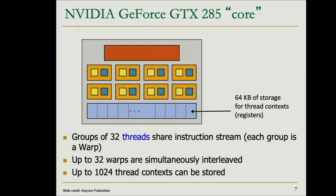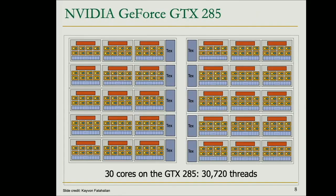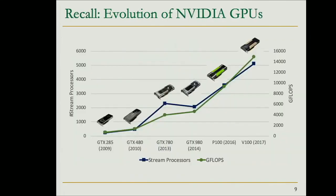On each GPU core, what we execute are thread blocks. Thread blocks are decomposed into warps, and each warp is a set of 32 threads that run in parallel as a basic SIMD unit. This is the full picture of the GeForce GTX 285, where you can find 32 GPU cores. The basic architecture has evolved a lot over the last 10–12 years. This one was released in 2009, but the first CUDA-capable GPUs were released two to three years before.